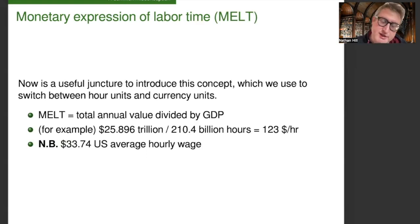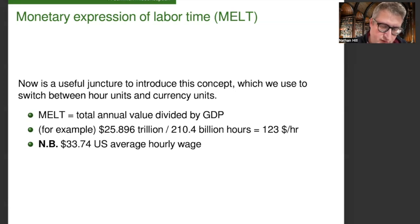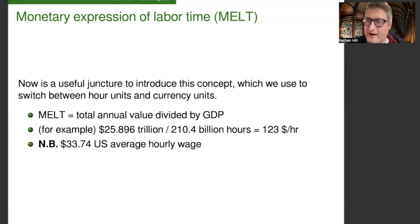Now is a good moment to introduce the notion of the monetary expression of labor time, or the so-called MELT. This is what allows us to switch between denominating values in dollar terms and in hour terms. The monetary expression of labor time can be arrived at by taking the total annual value in labor time and dividing by the GDP. Using data from the U.S., the GDP was $25.896 trillion and the hours worked — I think these are 2022 figures — are 210.4 billion hours. So the monetary expression of labor time is $123 per hour: the amount of added value that working one hour in the U.S. economy provided.